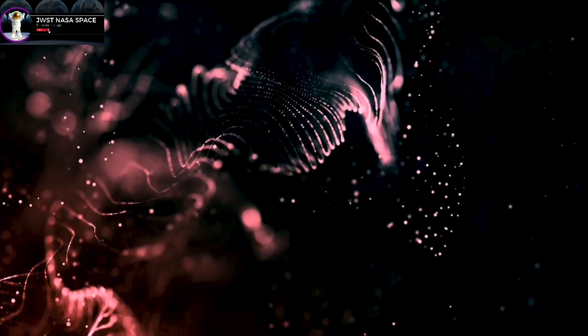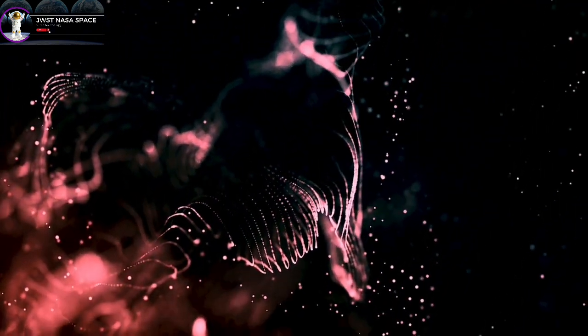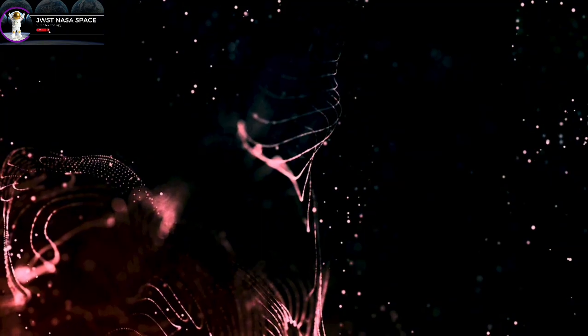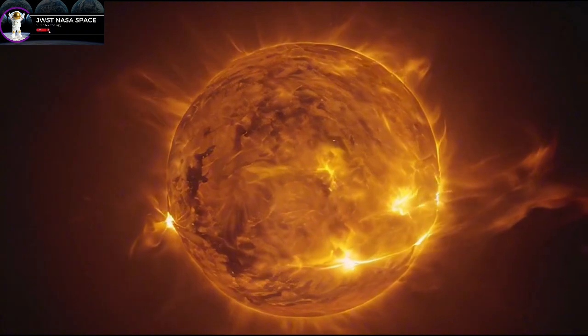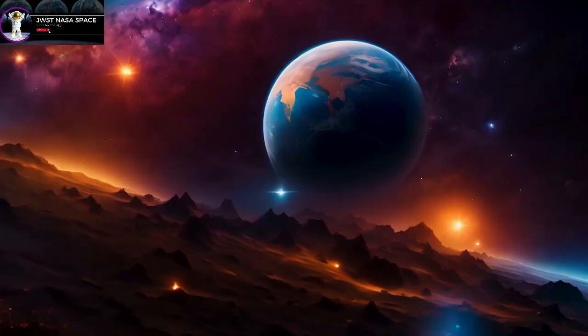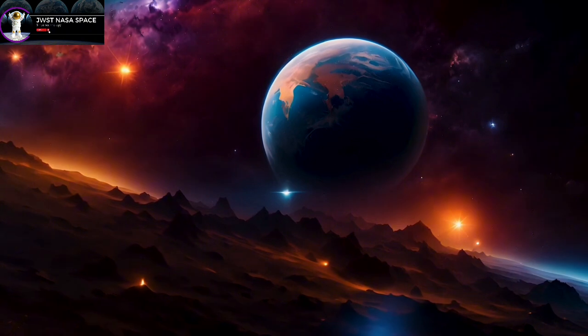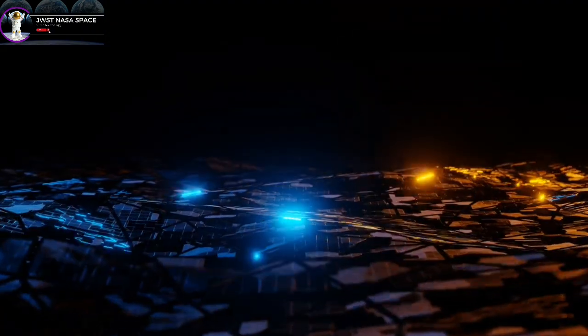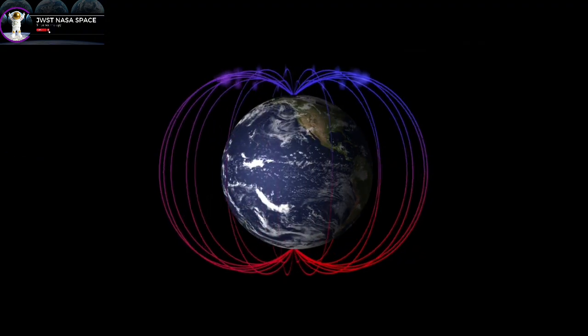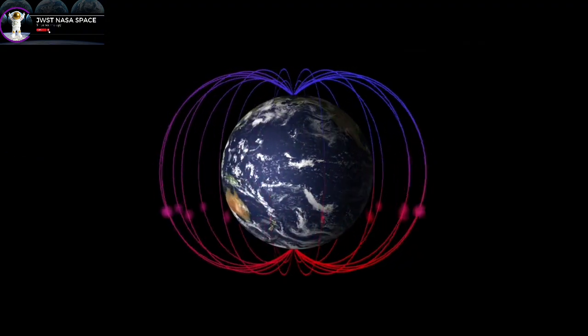Among them, Proxima Centauri b stands out as a truly remarkable and enigmatic planet. With a year lasting only 11.2 Earth days, its distance from its star is much closer than Earth's distance from the sun. This means one side of the planet is constantly bathed in light while the other remains in eternal darkness.